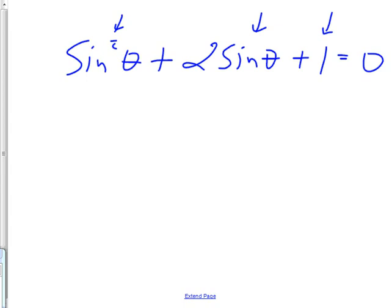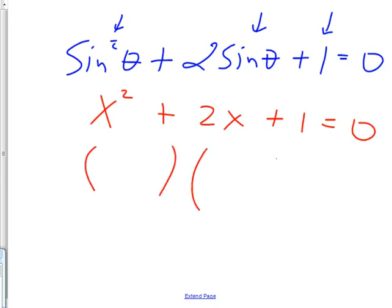I would change it over — since it's hard to write sines over and over, I swap out: every time I see sine, I just say x. So this becomes x squared plus 2x plus 1 equals zero. That looks like a normal problem I can factor: x plus 1 and x plus 1, giving x equals negative 1.